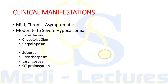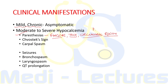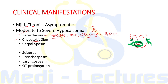Mild and chronic hypocalcemia is usually asymptomatic. Moderate to severe hypocalcemia can present with paresthesias mainly in the fingers, toes, and circumoral region — the circumoral site is a very important location. This is due to increased neuromuscular irritability. One important sign is Chvostek's sign, which is twitching of circumoral muscles in response to gentle tapping of the facial nerve just anterior to the ear.